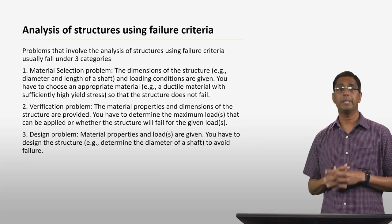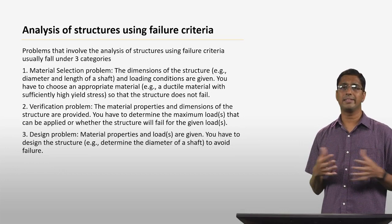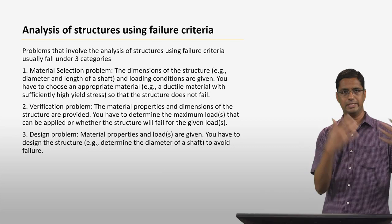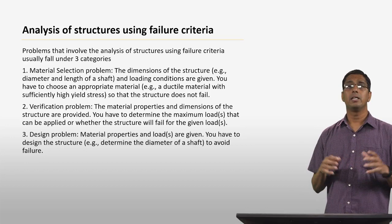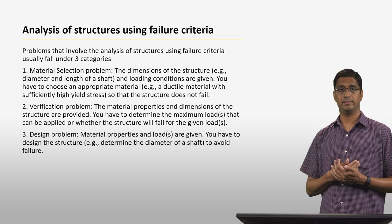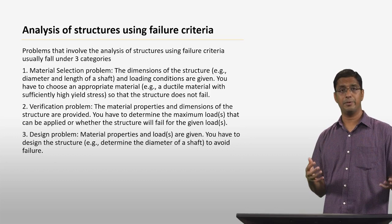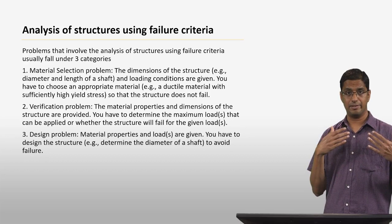The second category is a verification problem. In this case, the material properties are given — you are told to use a particular steel to construct the shaft — and you are also given the dimensions of the shaft: its length, diameter, and so on. What you have to do is determine what the maximum loads are that you can apply, or if you know the loads, figure out whether the shaft will survive or fail.